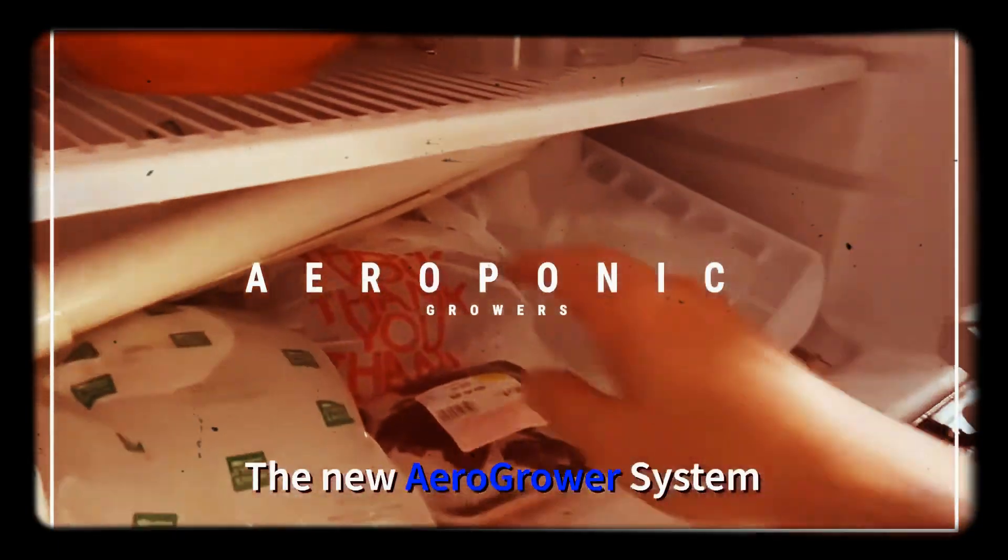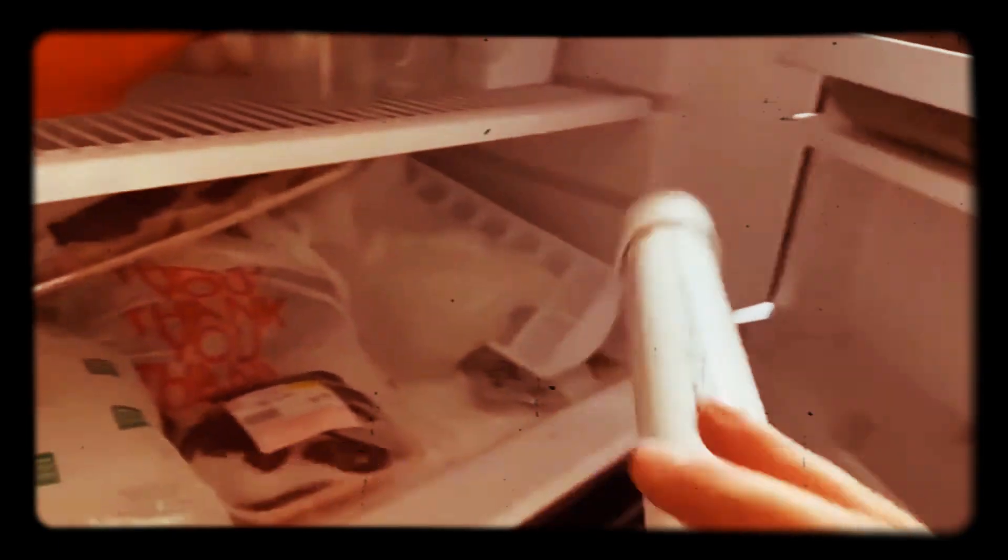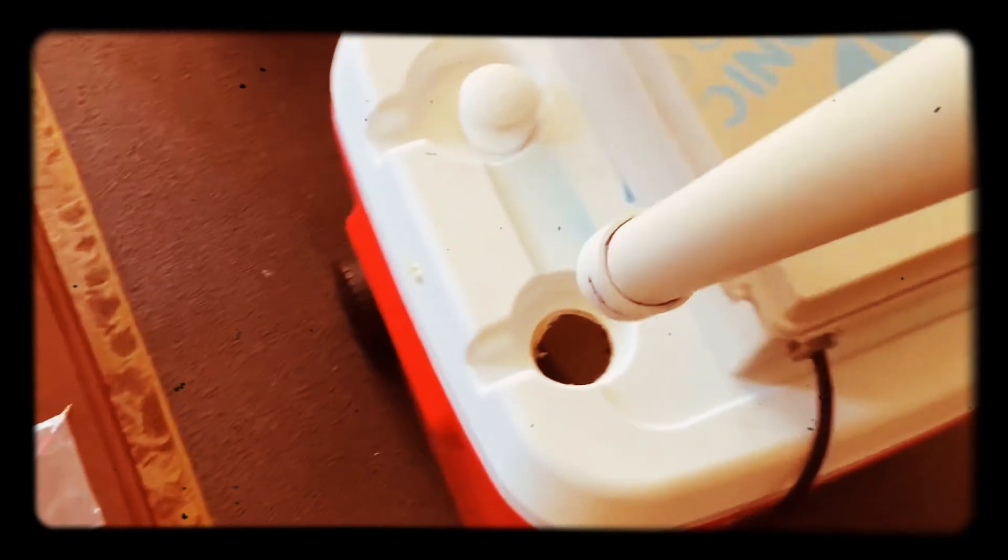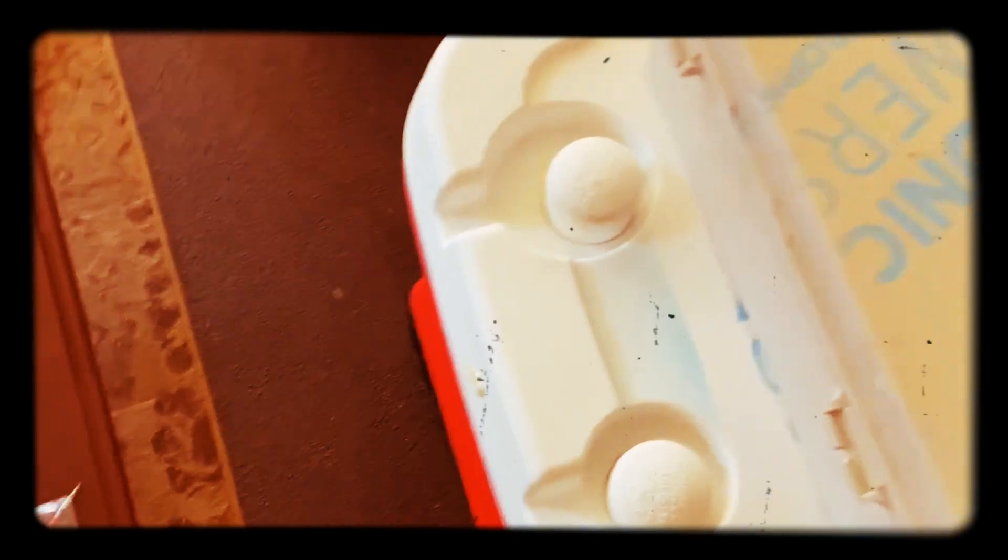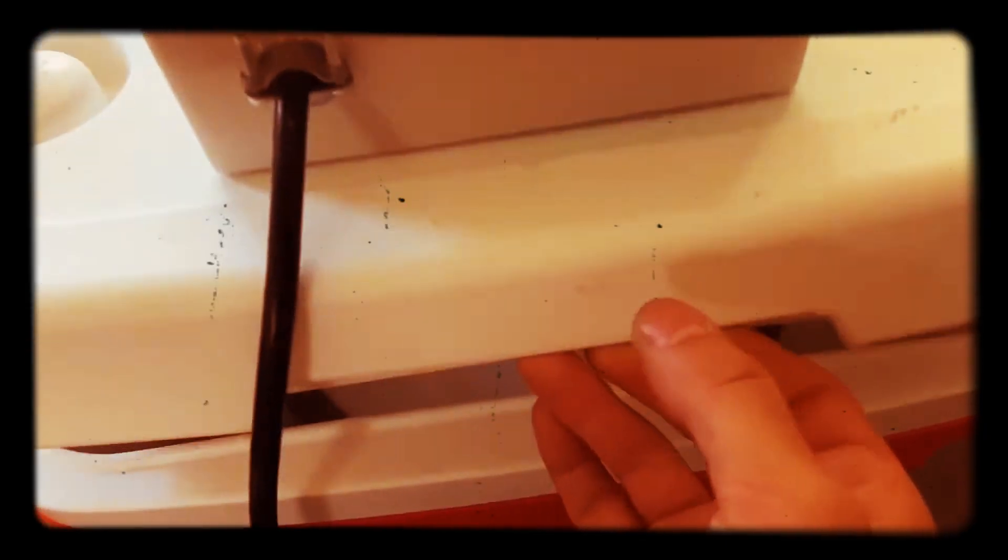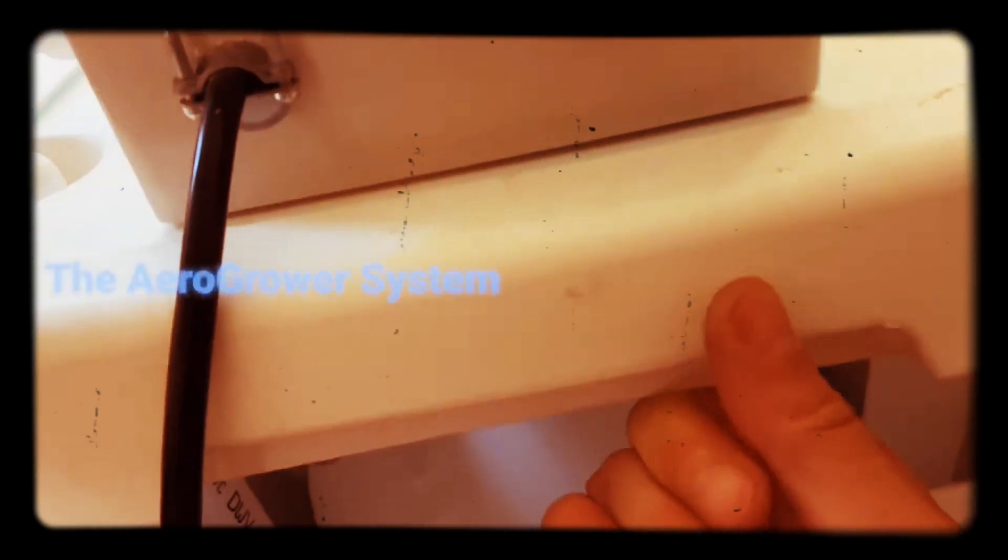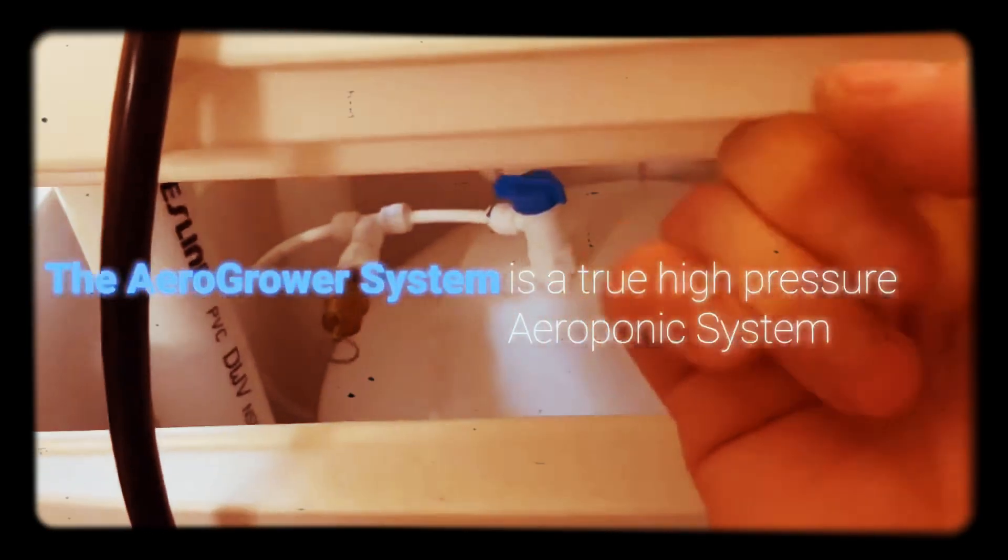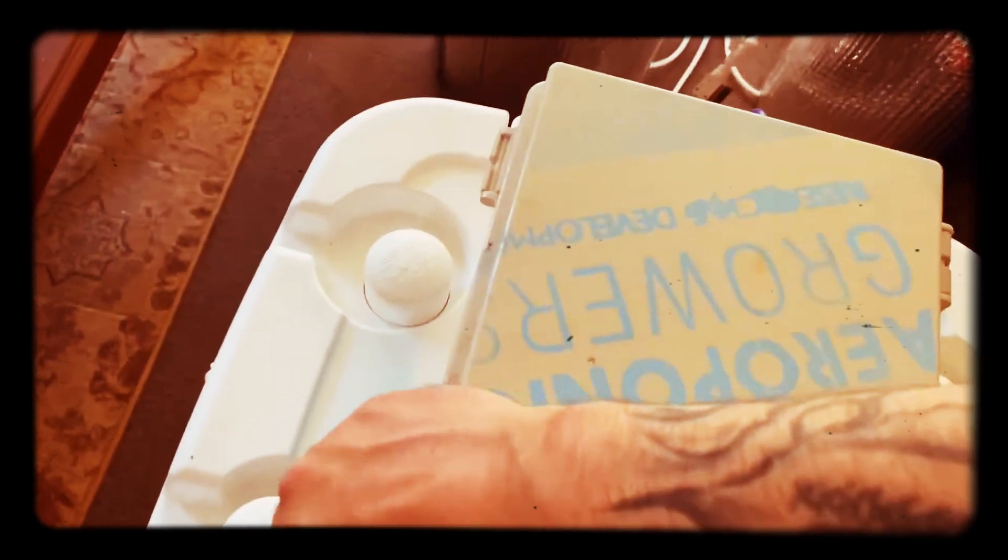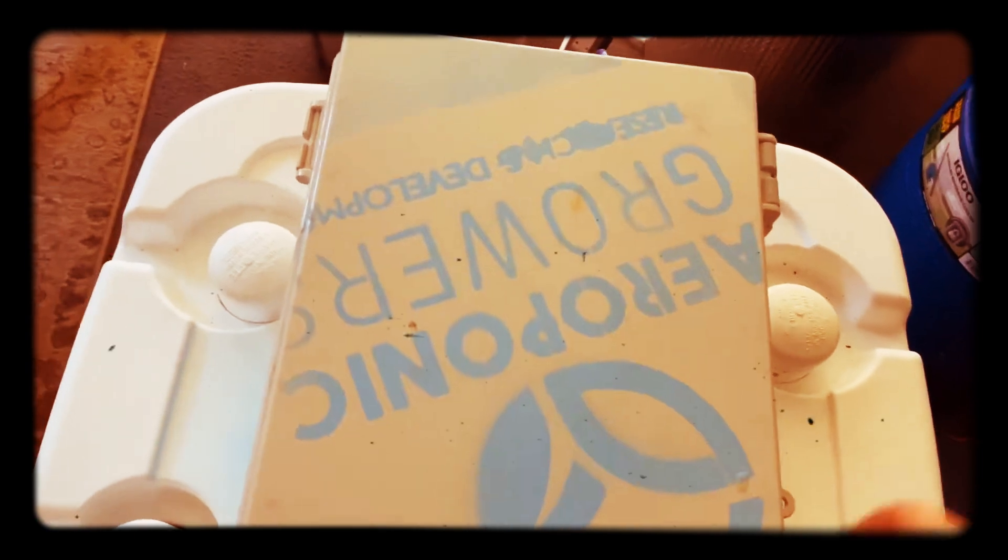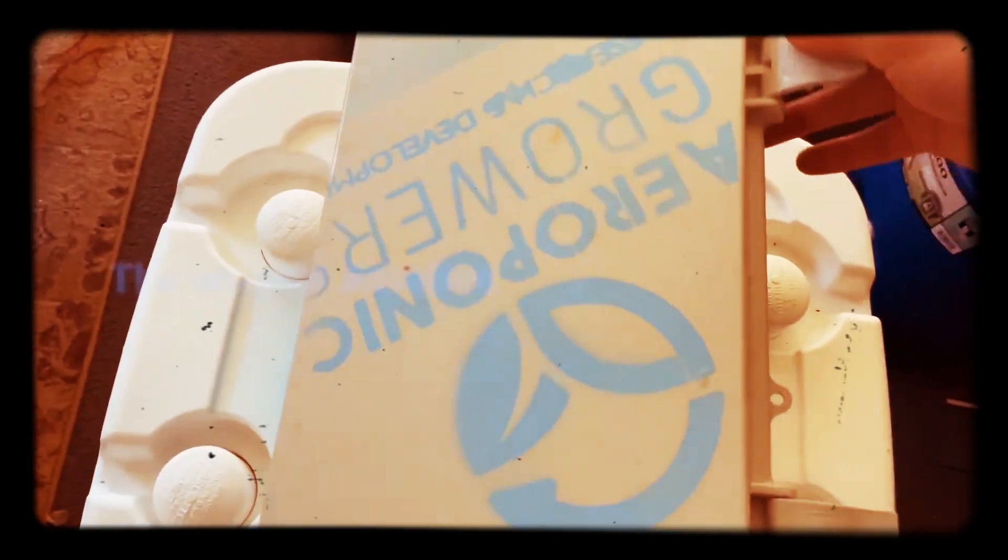So I set up the old AeroBox 2 to a new system now which is the Aero Grower. Instead of putting ice in my nutrients, I figured out how to make a high pressure system with putting the ice around the accumulator tank inside of a cooler, which keeps everything consistent for a good five days, give or take.